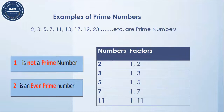Similarly, two is the only number which is an even number as well as a prime number. So two is an even prime number. This is the only number which is an even prime number, because two is divisible by two — that's why it is called an even number — and two is having only two factors: one and itself.